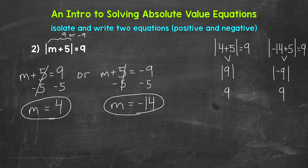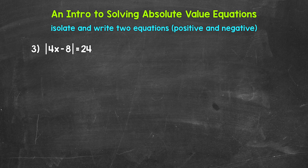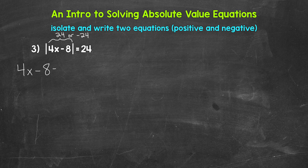Lastly, let's move on to number three. We have the absolute value of four x minus eight equals 24. Our absolute value is isolated, so now we write our two equations. Four x minus eight needs to equal 24 or negative 24. So: four x minus eight equals 24, or four x minus eight equals negative 24.